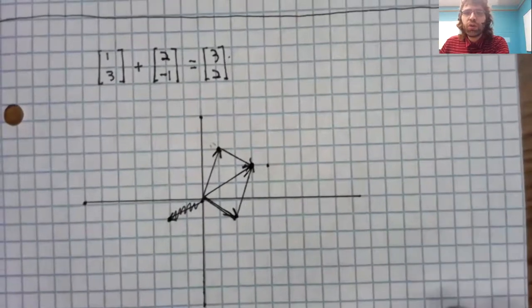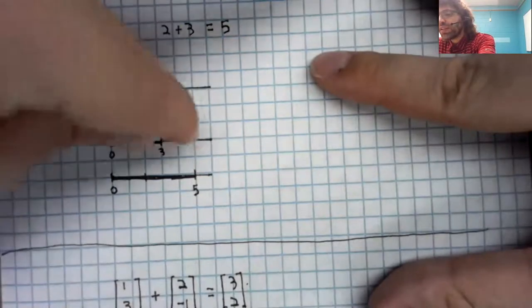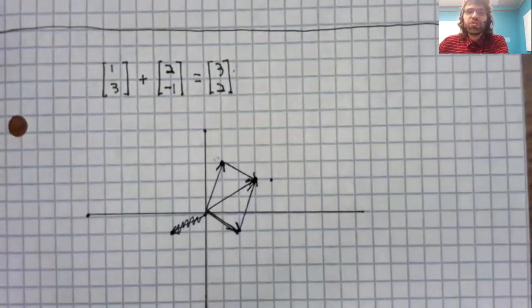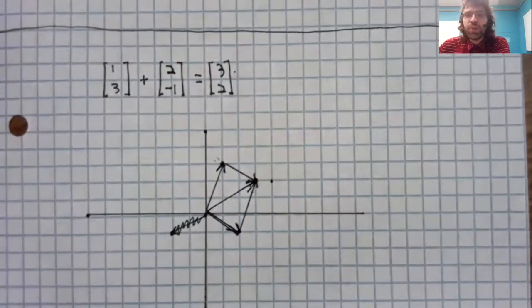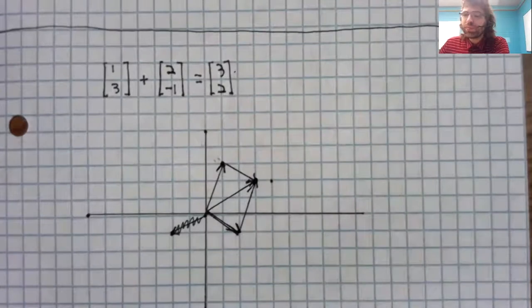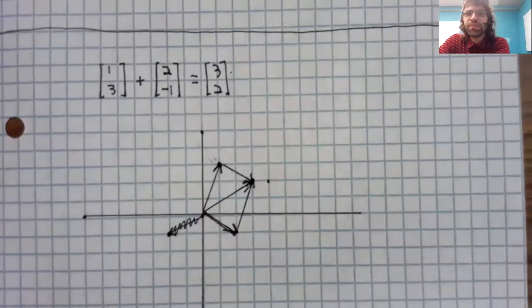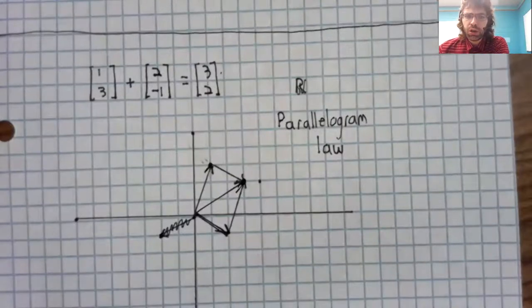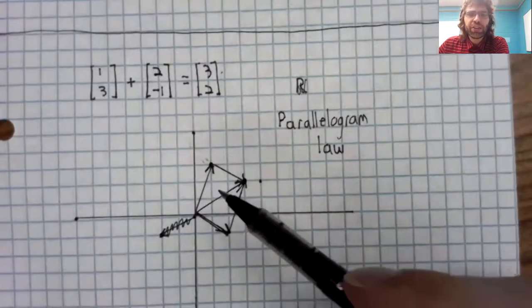So just like numerical addition, where you can think of taking this line segment and adding it to this line segment to get this line segment, so with vector addition. And the phrase that normally gets used is that we move our vectors so that they're tip to tail. And this visual thing has a name. It's called the parallelogram law, because notice the figure we created here is a parallelogram.